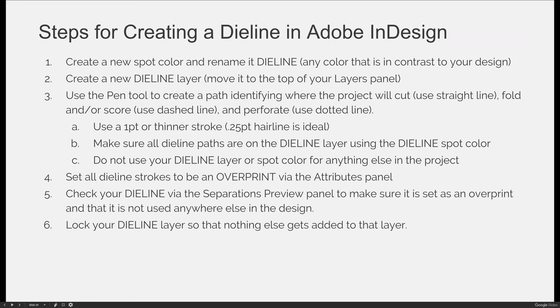First, create a new spot color on your swatches panel and rename it 'dye line.' It doesn't really matter what the color is, so usually you'll choose a color that contrasts with the colors in your design. However, if you're working with a commercial printer and they tell you they want all dye lines to be magenta, then just make them magenta.